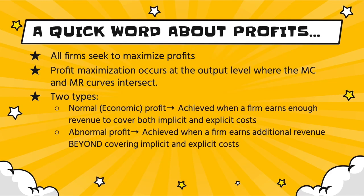We do need to talk about profits. Since all firms seek to maximize profit, the profit maximization level occurs where the marginal cost and marginal revenue curves intersect. There are two types of profits: normal profits, or economic profits, where the firm achieves just enough revenue to cover both implicit and explicit costs of production; and abnormal profits, where they achieve additional revenue beyond normal profits.